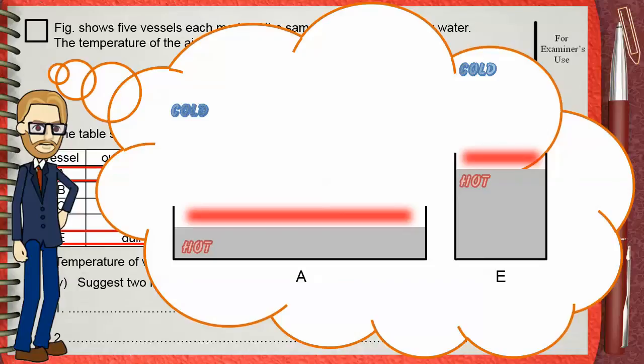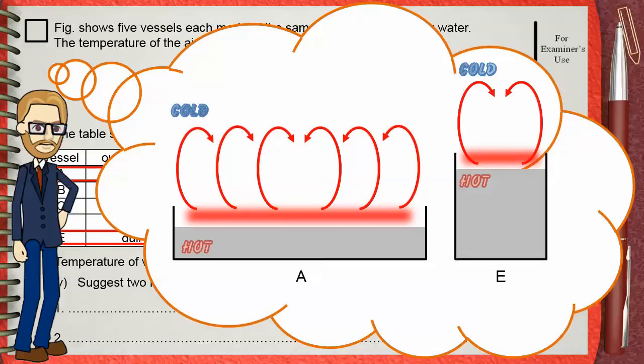Also, this hot air will make convection. Hot air rises up and is replaced by cold air. This is another factor that causes the loss of heat energy and then the fall in temperature. The amount of convection in A is much greater than that in E because of the larger surface area.